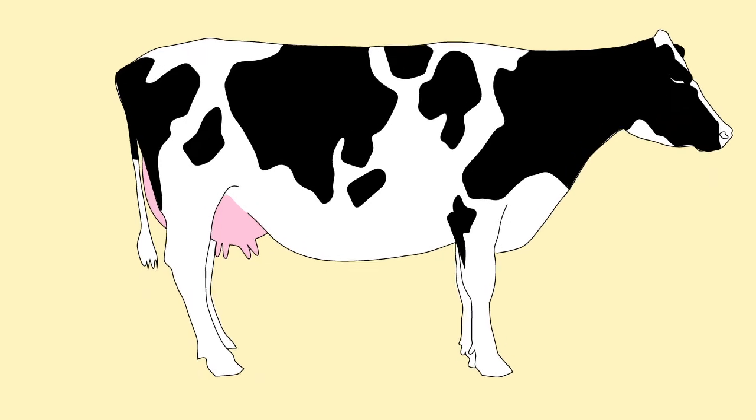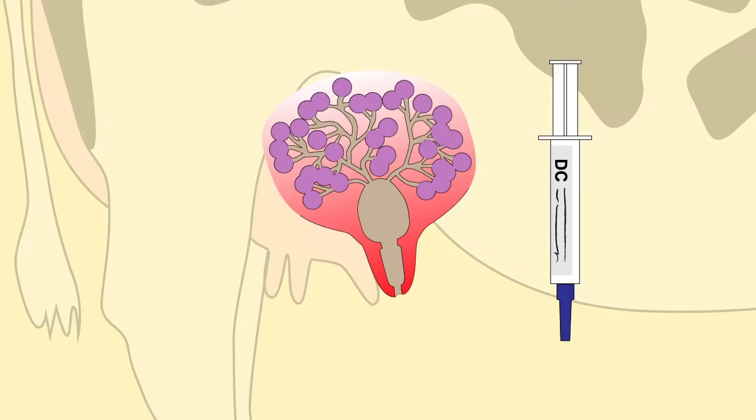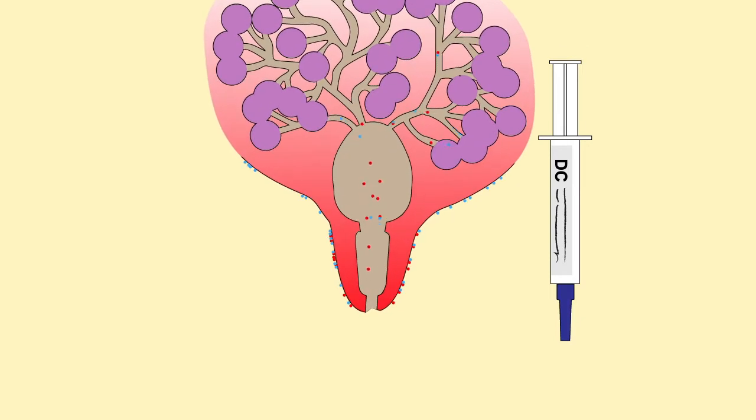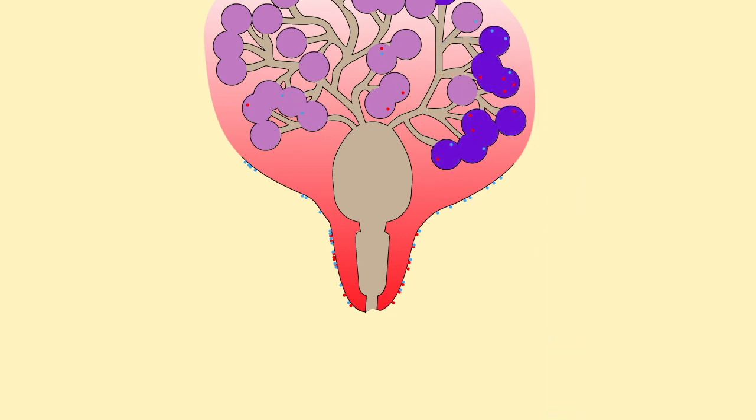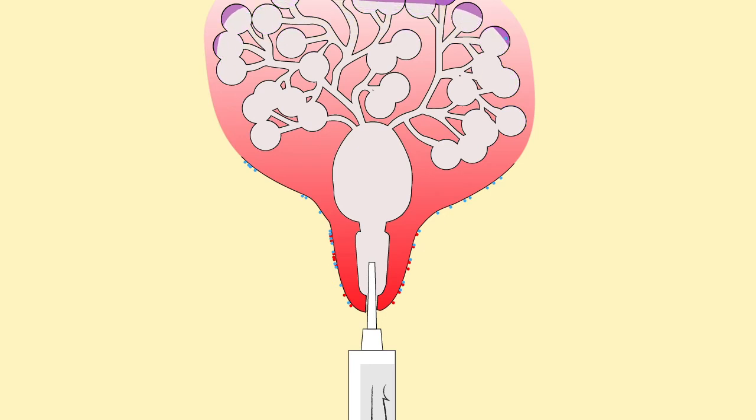Dry Cow Tubes are intramammary antibiotic treatment at the end of lactation. They help eliminate existing infections and help prevent new infections in the dry period. Dry Cow Tubes are long-acting preparations and are different to the tubes used to treat mastitis.